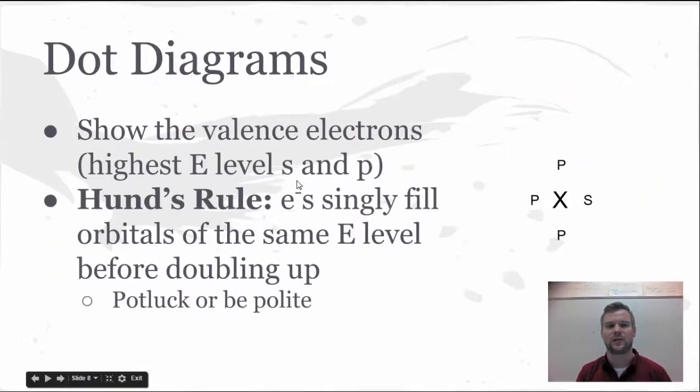Now we can also show these valence electrons in something called a dot diagram. And they're only going to show the valence electrons, the highest energy level electrons, which is going to only be the S and P sublevels. Dot diagrams also require us to do something called a Hund's rule. And Hund's rule basically says that electrons are going to fill a single orbital. So that's why we talked about orbitals at the beginning of this talk.